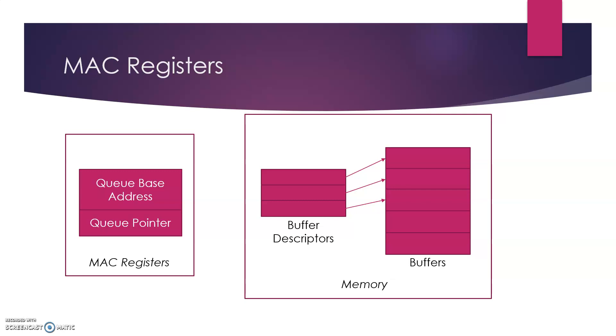Now the queue base address register always points to the first buffer descriptor in the buffer descriptor list. The queue pointer points to the next buffer descriptor after the conclusion of the current transaction. And it is incremented by the buffer descriptor length, that is two words in this case.